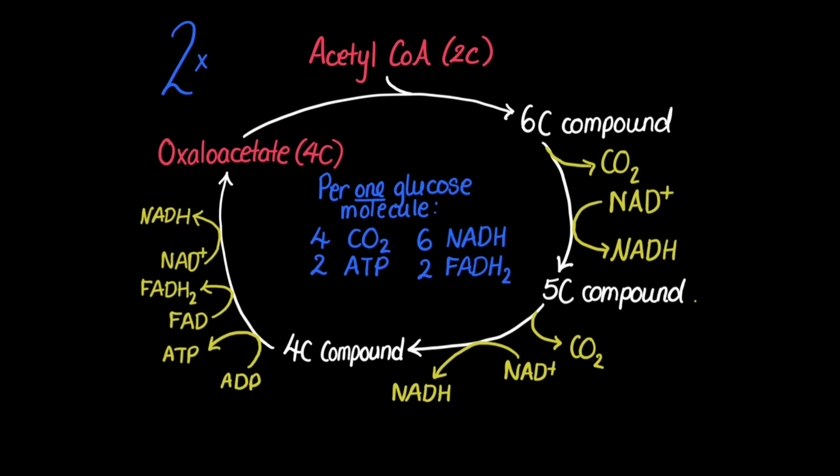Now, before we move on, it might be worth noting that you may have seen the Krebs cycle being referred to as the tricarboxylic acid cycle, but it's the same thing. The other thing is you may have seen the six carbon, five carbon, and four carbon compounds named in diagrams that you have or in textbooks. But it's very clear in the IB syllabus that they say the names of the intermediate compounds in the Krebs cycle are not required.